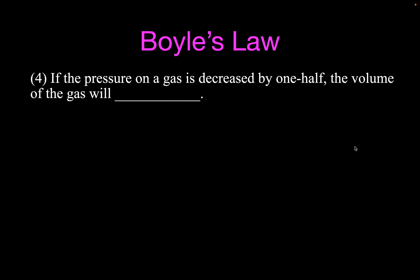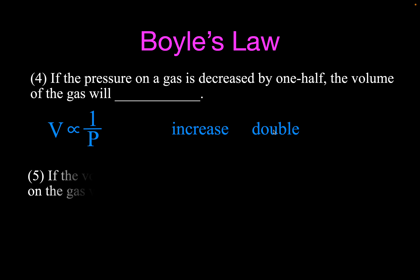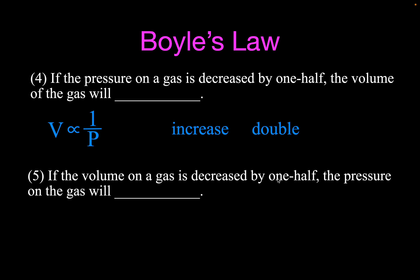Here are two qualitative questions. If the pressure on a gas is decreased by one half, the volume of the gas will increase. We have the relationship: volume equals 1 over the pressure. If we decrease the pressure, the volume has to increase — and if we cut the pressure in half, then the volume is going to double. For question 5: if the volume on the gas is decreased by one half, what's the new pressure? The pressure is proportional to 1 over the volume. If we decrease the volume — squeeze the gas into half the volume — then the pressure is going to increase and it's going to be double.